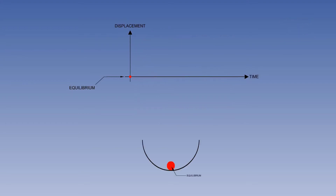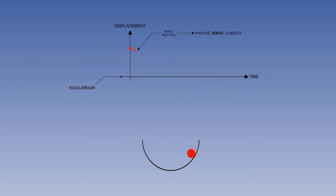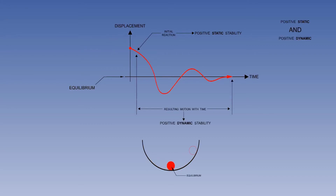Let's reset the graph and include the ball in the bowl. Displacement takes place, the disturbing force is removed, and the initial movement back towards equilibrium begins. Over a period of time, with several reducing oscillations through equilibrium, a return to equilibrium takes place — an illustration of positive static and positive dynamic stability. This is the ideal type of stability for an aeroplane, but in reality it is not quite so good as illustrated.